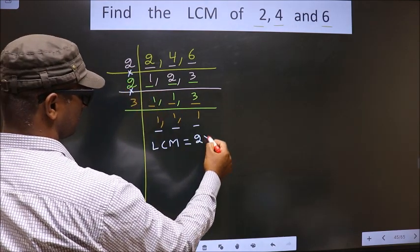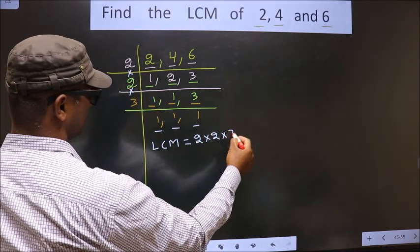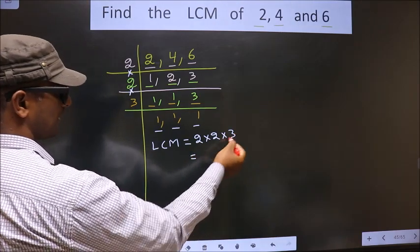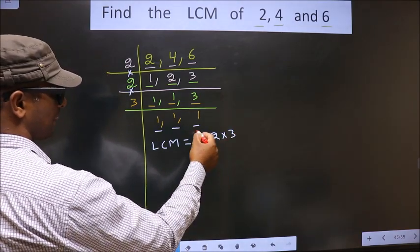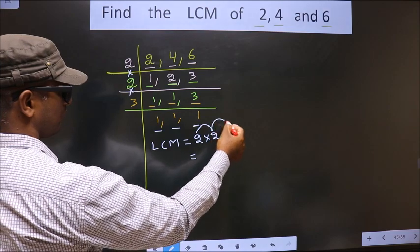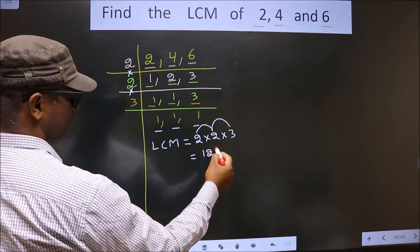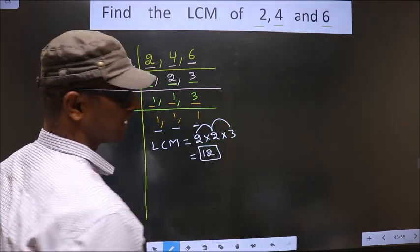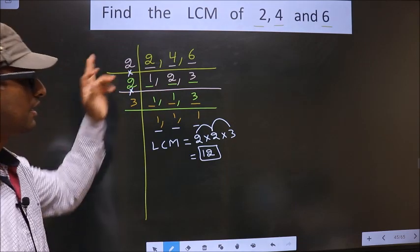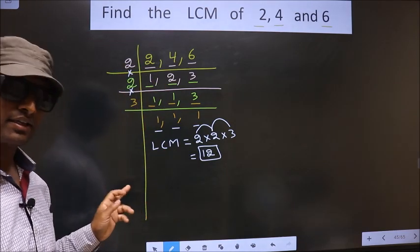That is 2 into 2 into 3. So you multiply all these numbers, that is 2 into 2, 4, 4 into 3, 12. So this is our LCM. Am I clear?